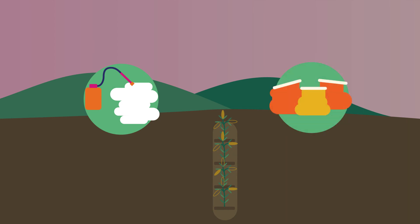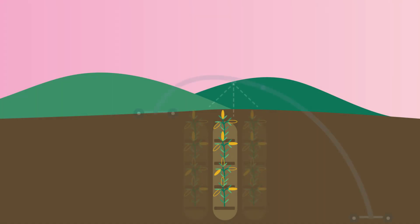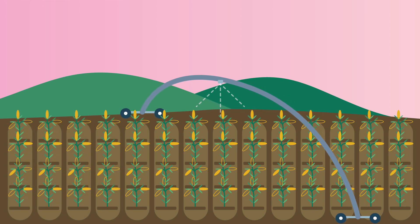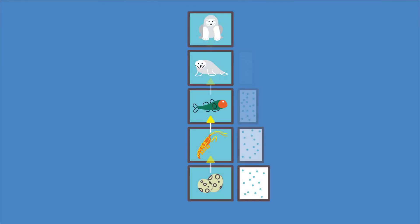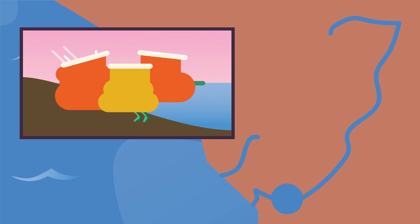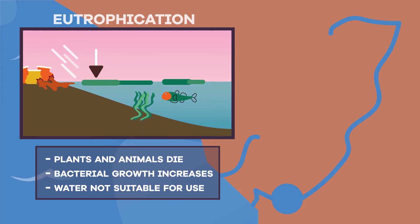Intensive farming of crops involves the use of chemicals called pesticides and fertilizers. Pesticides kill pests, including insects that would normally feed on the crop. Fertilizers increase plant growth. However, both can have negative environmental effects — pesticides can bioaccumulate in the food chain and become toxic to top predators.